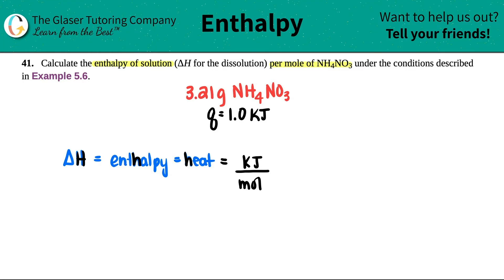Now they said that we had to go back to example 5.6. So that's what I did for you guys. I wrote down the information that we need in order to figure out this problem from 5.6. The amount of heat that was produced was 1.0 kilojoules. And they told us that 3.21 grams of this ammonium nitrate was used in order to produce the 1.0 kilojoules.